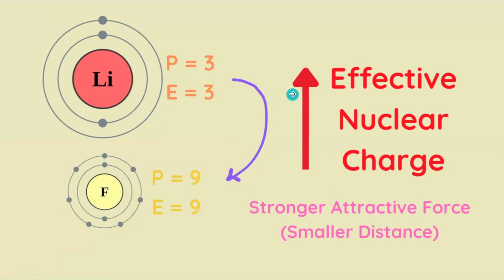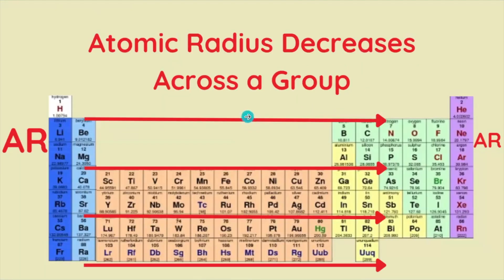Thus, the nucleus is going to be better, stronger, in attracting these valence electrons closer to itself. And we call this phenomenon effective nuclear charge. So atomic radius decreases as we go left to right on the periodic table because of increasing ENC.